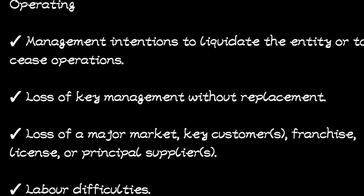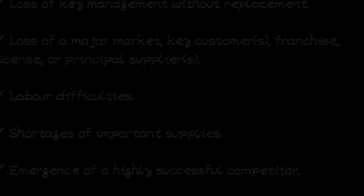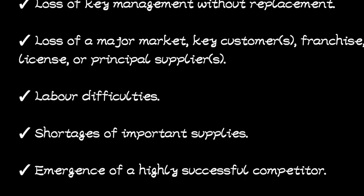Other operating indicators include labor difficulties, whereby the entity finds it hard to retain employees — staff keep coming and going. Another is shortage of important supplies, where the entity cannot easily get the key materials it needs. Finally, the emergence of a highly successful competitor — if they face strong new competition in the industry, that is also an operating indicator of going-concern problems.